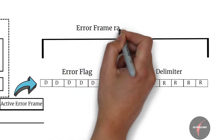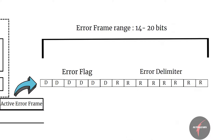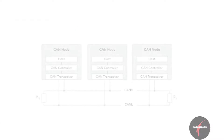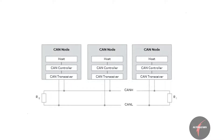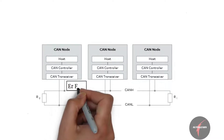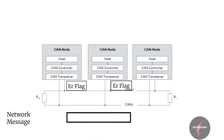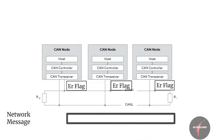The error frame that appears in the network can range from 14 to 20 bits, with 6 to 12 bits of error flag and 8 bits of error delimiter. You might wonder how that is possible when the error-detecting node is sending only 6 bits of error flag. In the network, it's not just the first ECU which detects the error that sends the error flag — other ECUs that detect the error flag also send their own error flag. So depending on the time when other ECUs get to know the error, the error flags will be extended accordingly.